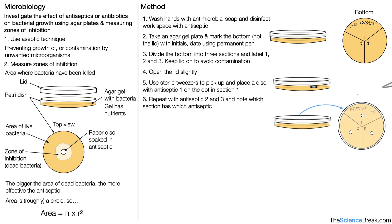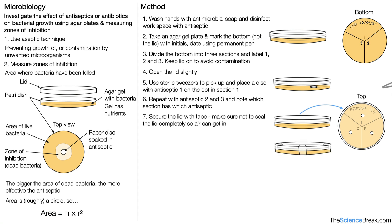We repeat with antiseptic 2 and 3, noting which section has which antiseptic. Taking a top view, we can see labels 1, 2, and 3 with our three discs. We then secure the lid with tape, making sure not to seal it completely so that air can get in and allow aerobic respiration. We incubate — in other words keep warm — at 25 degrees Celsius for about 48 hours. We can then see our dish has zones of inhibition for the different antiseptics.